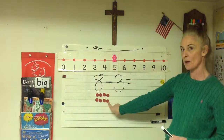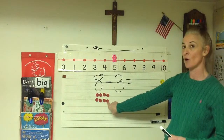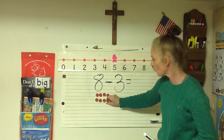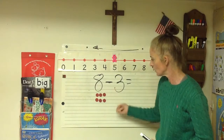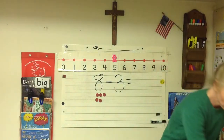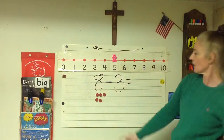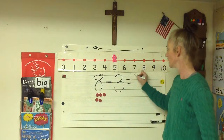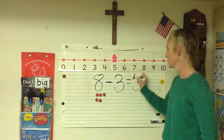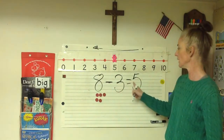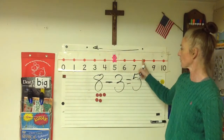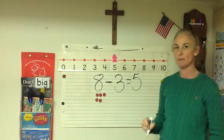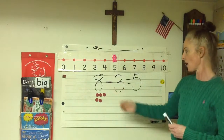Let's take away three manipulatives to see if there are five left — five will be our difference. One, two, three. Okay, let's count: one, two, three, four, five. So eight minus three equals five. We took our three steps back, landed on five. We took three manipulatives away and have five.